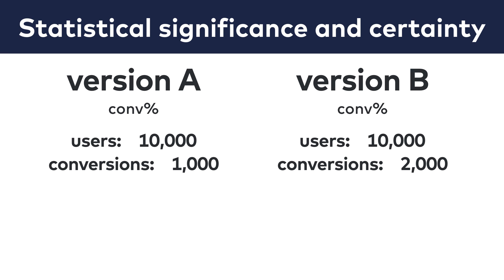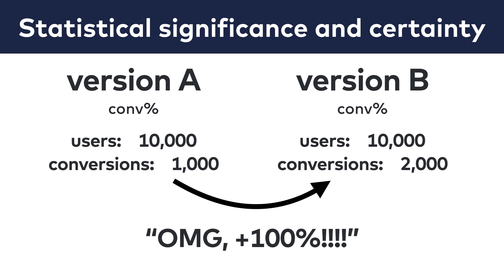What if we have 10,000 users in version A and 10,000 users in version B, and 1,000 conversions here and 2,000 conversions there? In this case there is no doubt that the result is real and that it's statistically significant. We have too many data points to assume any role of chance or natural variance here.